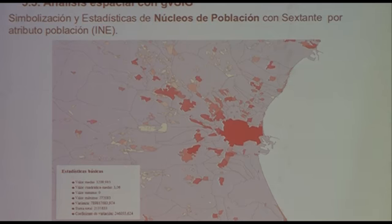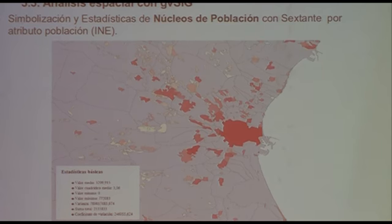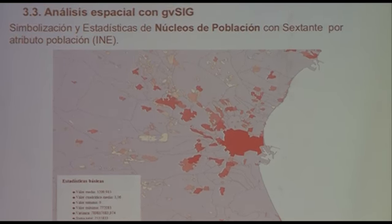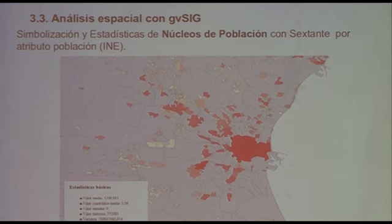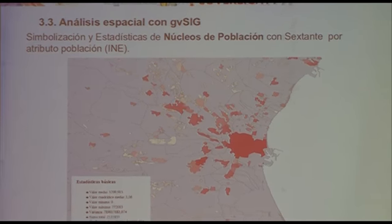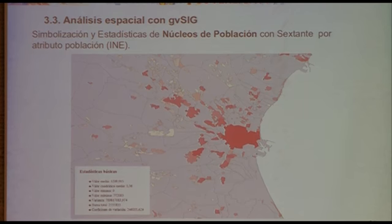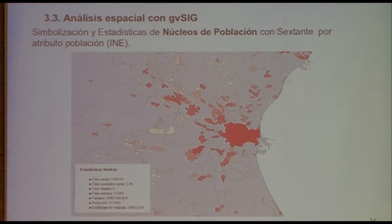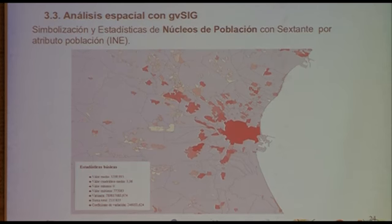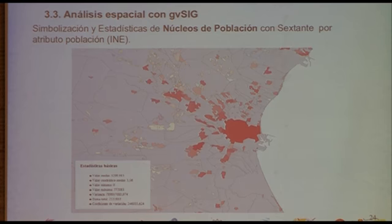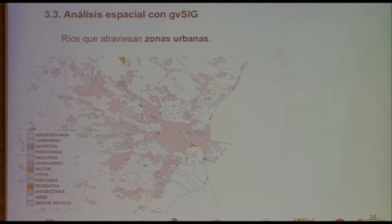Finally, let me tell you about the application of our product with GVSIG. We carried out spatial analysis for you to see what a user can do with our product. This analysis is based on towns and municipalities, symbolizing them with the population attribute of INE. The darker areas are the more populated areas. Valencia is obviously the area with the highest population. Basic statistics have been drawn, such as maximum value: Valencia, 800,000 inhabitants, and average population 2,500 for the whole region.